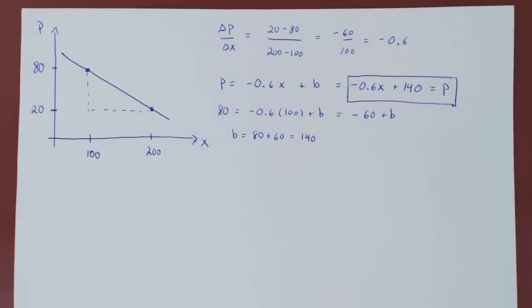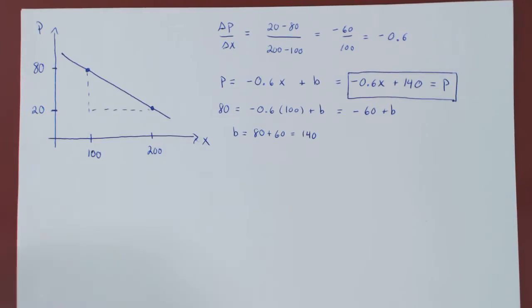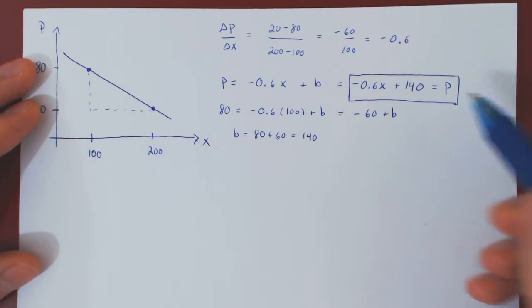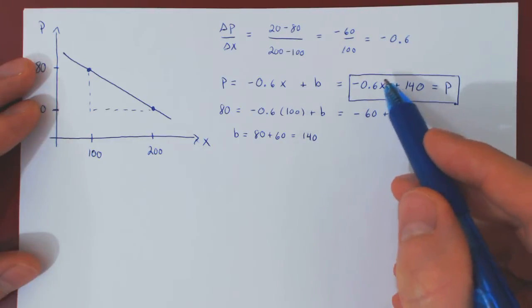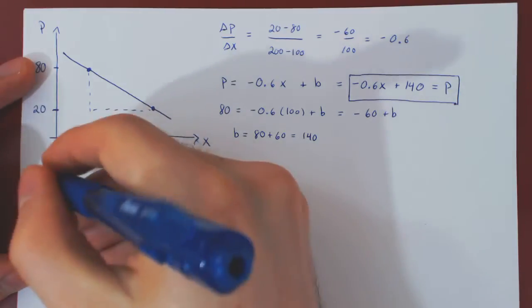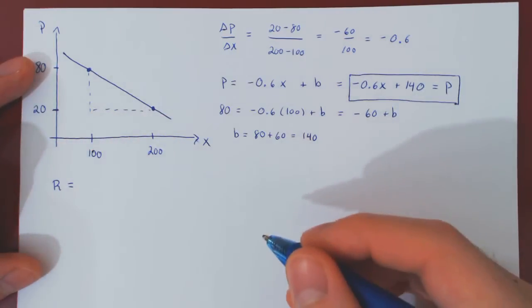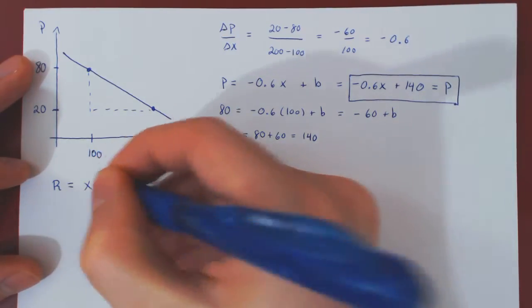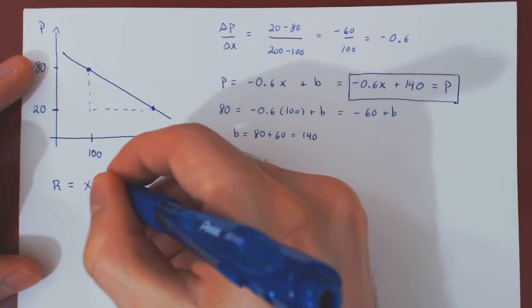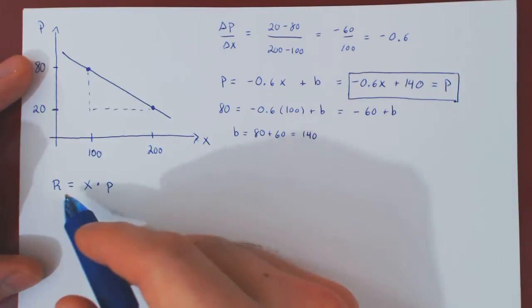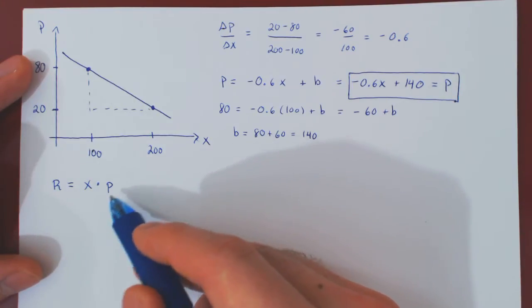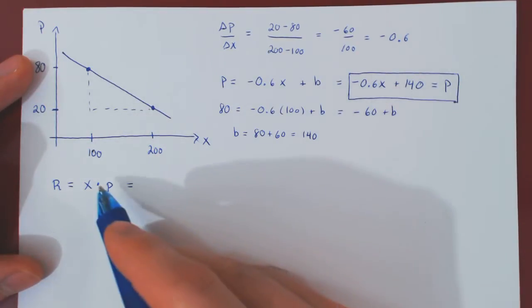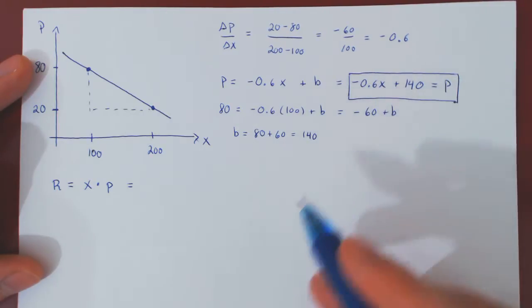Recall that we're interested in the change in revenue. The revenue is the number of units sold times the unit price. If we replace p by its function of x, then R(x) equals x times (negative 0.6x + 140), which gives us negative 0.6x squared plus 140x.